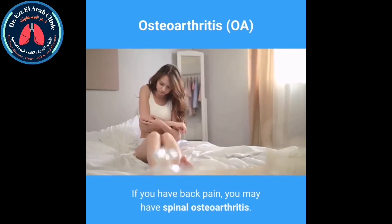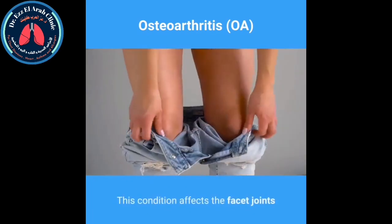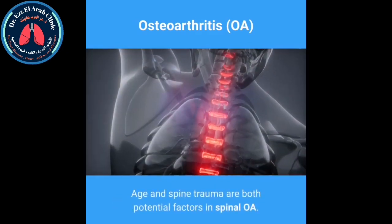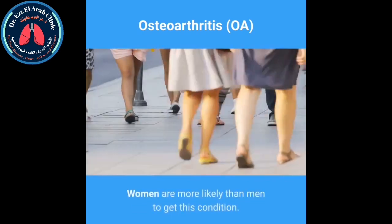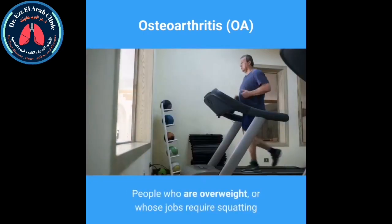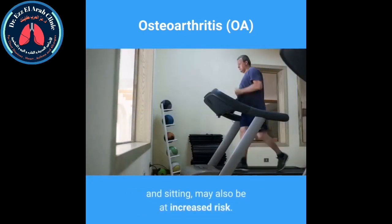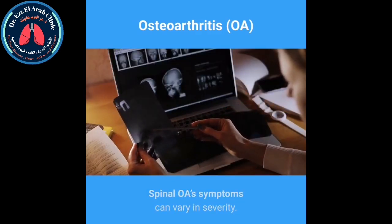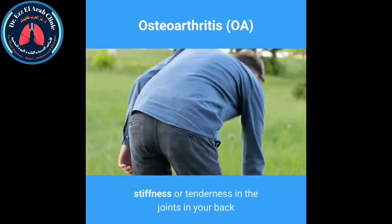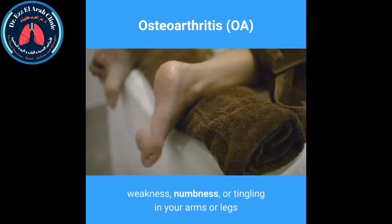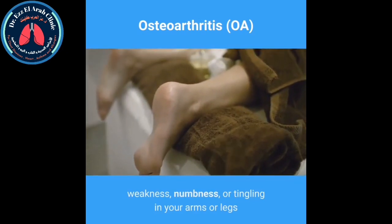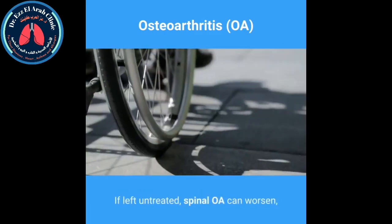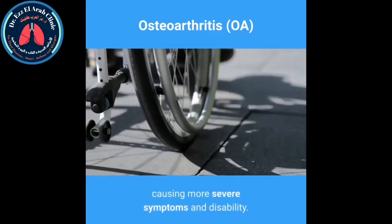Spinal osteoarthritis. If you have back pain, you may have spinal osteoarthritis. This condition affects the facet joints located in the lower back and buttocks. Age and spine trauma are both potential factors. Women are more likely than men to develop this condition. People who are overweight or whose jobs require squatting and sitting may also be at increased risk. Symptoms include stiffness or tenderness in the back joints, weakness, numbness or tingling in the arms or legs, and reduced range of motion. If left untreated, spinal OA can worsen, causing more severe symptoms and disability.